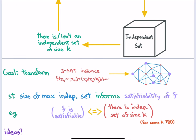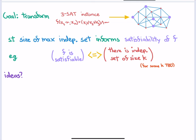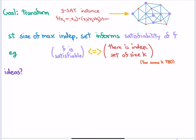Whether or not F is satisfiable should be connected to the maximum cardinality independent set of the resulting graph. As usual, I'll ask you for ideas first. In independent set, edges represent constraints — each edge says you can only take one of the two endpoints. So when it comes to satisfiability, for each variable I can only set it true or false, which might motivate adding an edge between xi and xi-bar.